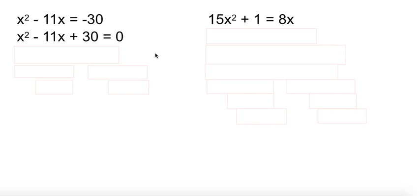Now we need factors of 30 that add up to 11. Well, you've got 1 and 30. Those don't add up to 11. 2 times 15. 3 times 10. 5 times 6. Hey, 5 and 6 add up to 11. We need a negative 11, so negative 6 and negative 5.